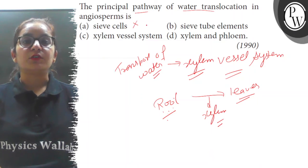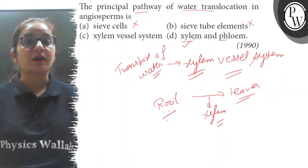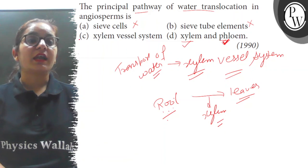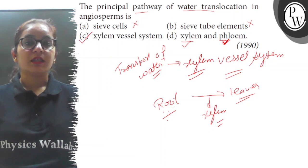Sieve cells are part of phloem tissue. Sieve tube elements are part of phloem. Option D is xylem and phloem. No, xylem helps in transport of water and phloem helps in transport of food or we can say sucrose. So the correct answer here is option C. Thank you.